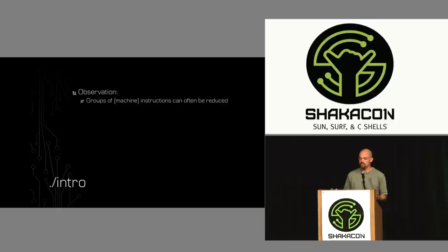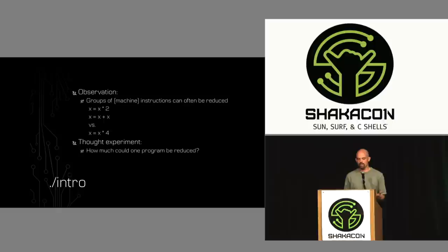Another observation — and this one should also be obvious — is that groups of instructions, be them regular programming instructions or machine instructions, can often be reduced to a more simple form. For example, if we had x equals x times two, and then x equals x plus x, essentially all we've done is quadrupled x. So we could reduce these two instructions into one: x equals x times four.